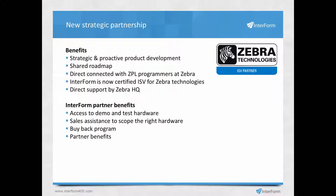Interform has joined a partnership with Zebra, the printer vendor, which helps us be more compatible with Zebra printers. We have a shared roadmap, so we are informed of future changes in advance, making it easy to implement them immediately. This also gives us increased support from Zebra for printing challenges at customer sites. As a customer, Zebra can help you size the right printer for your needs, and Zebra also offers a special buy-back program for Interform customers.